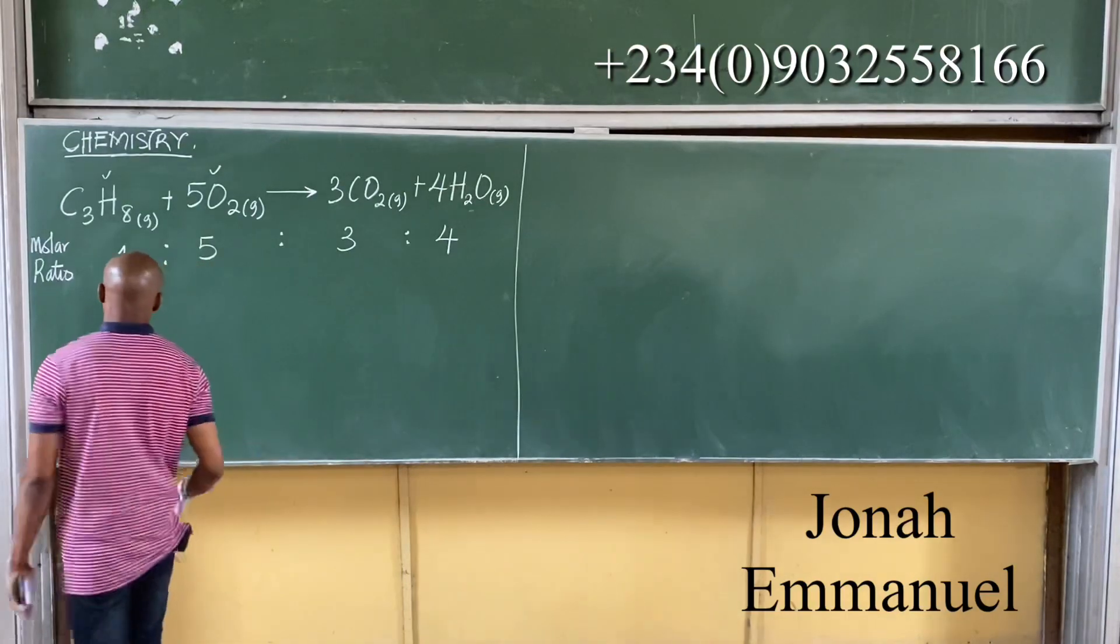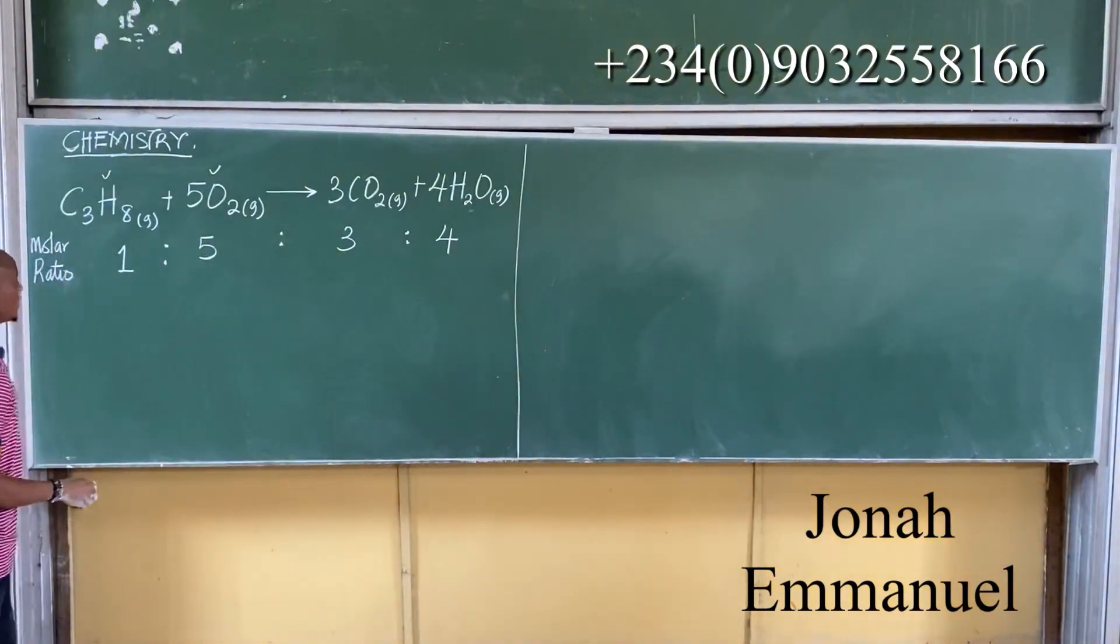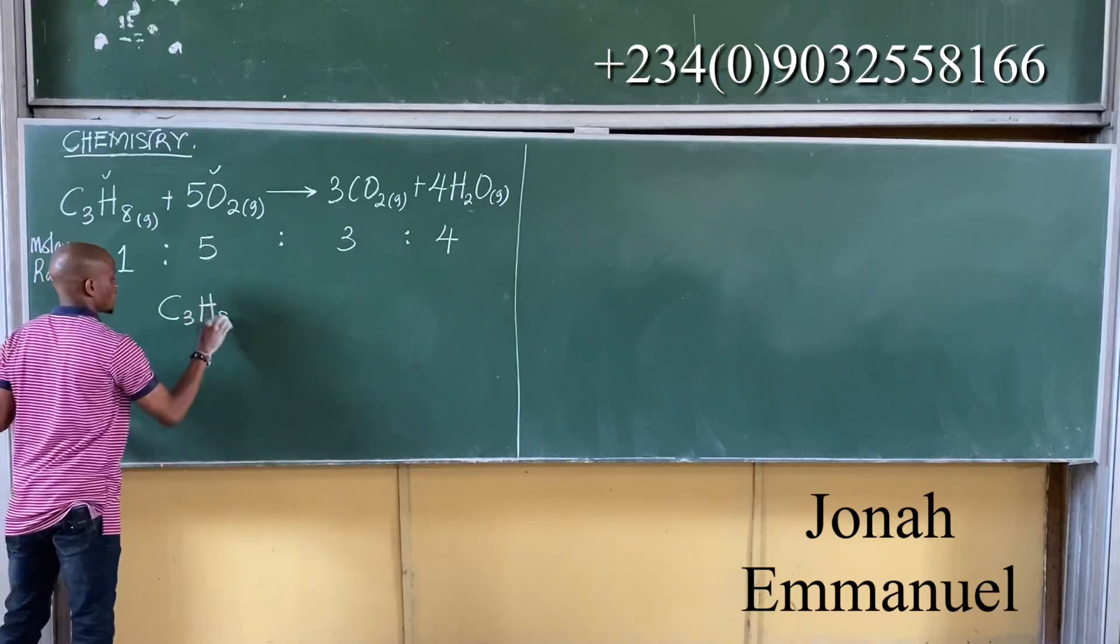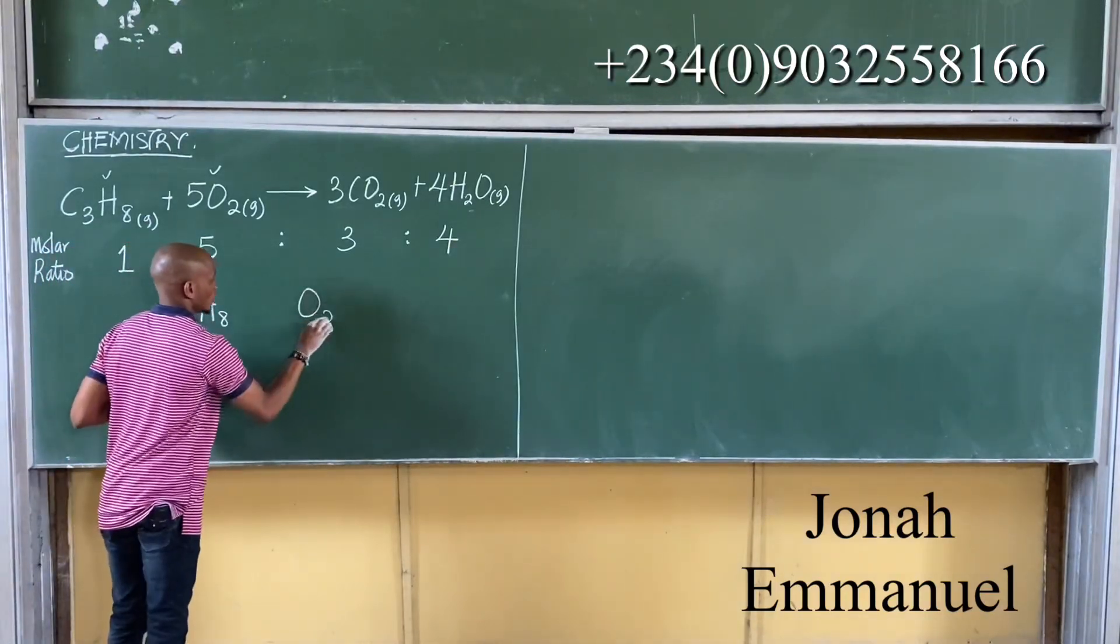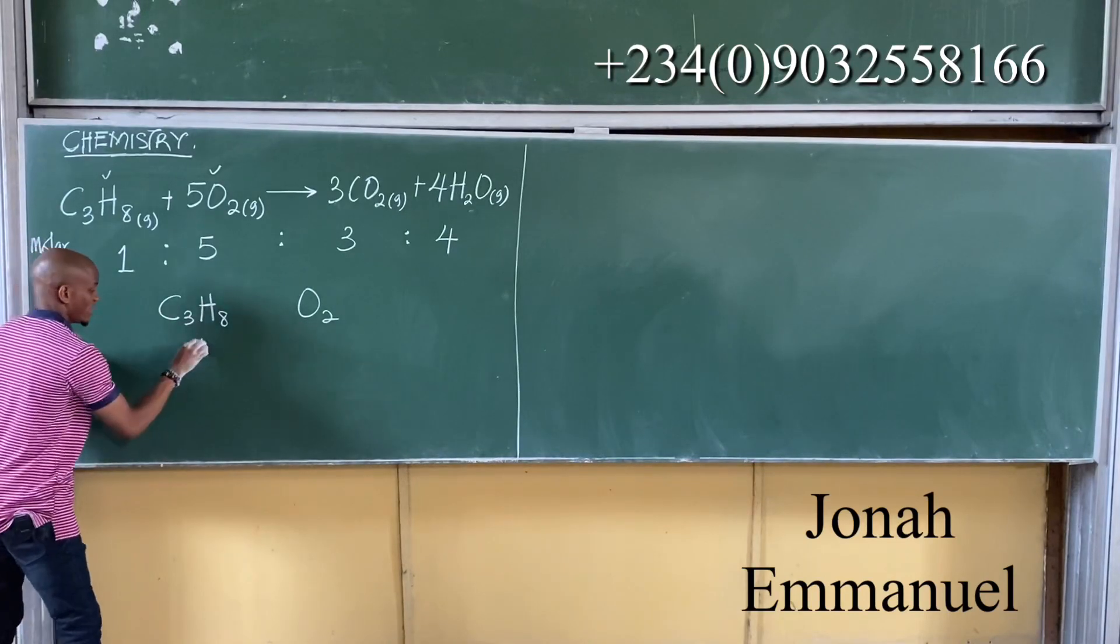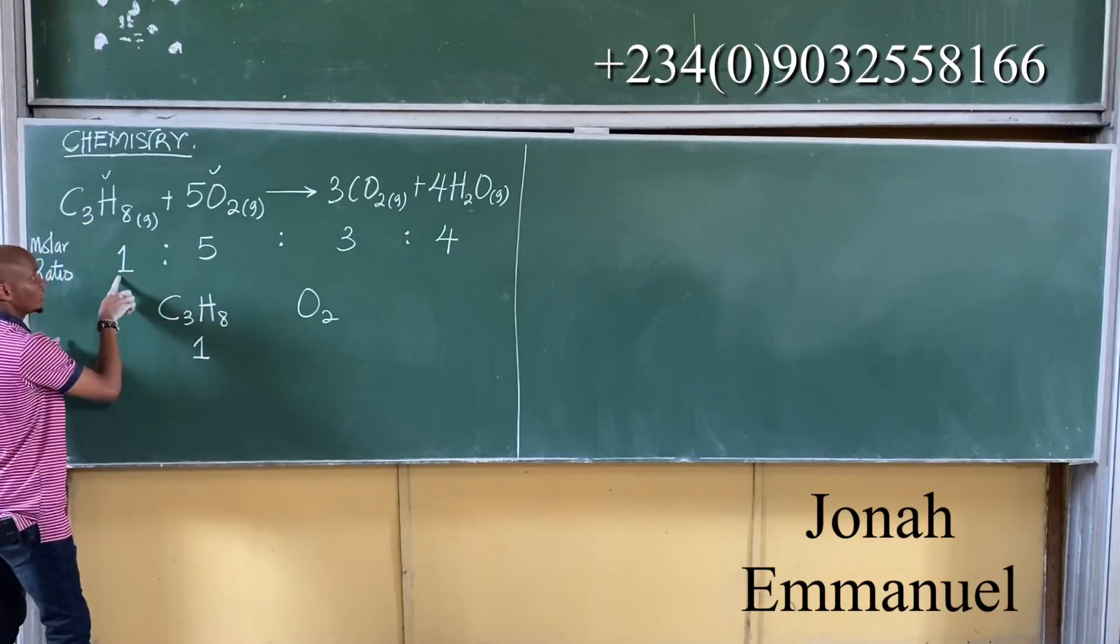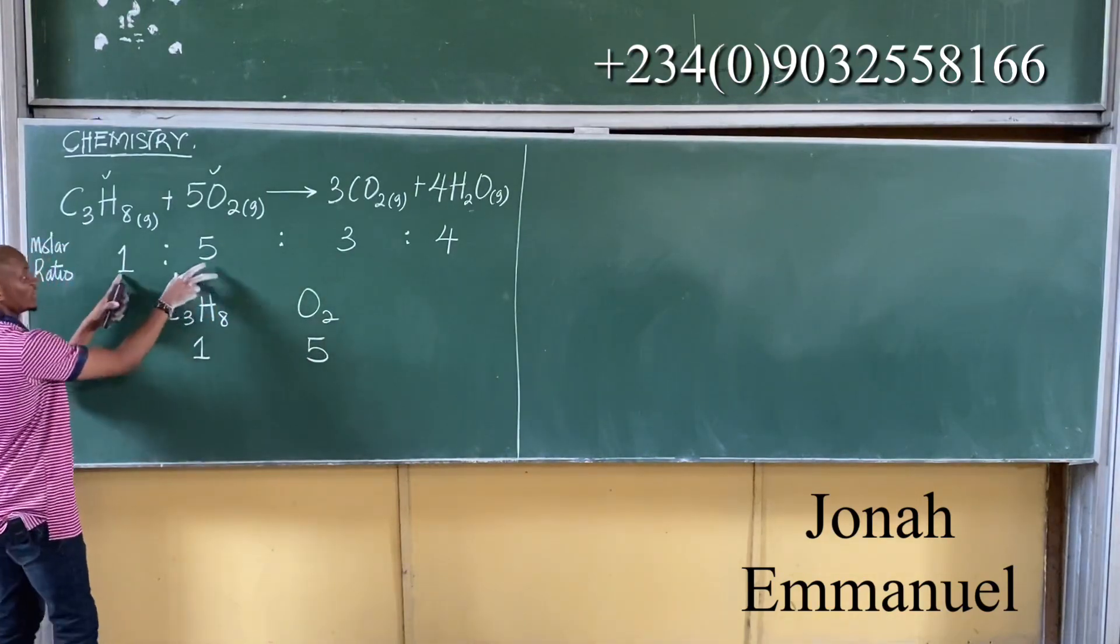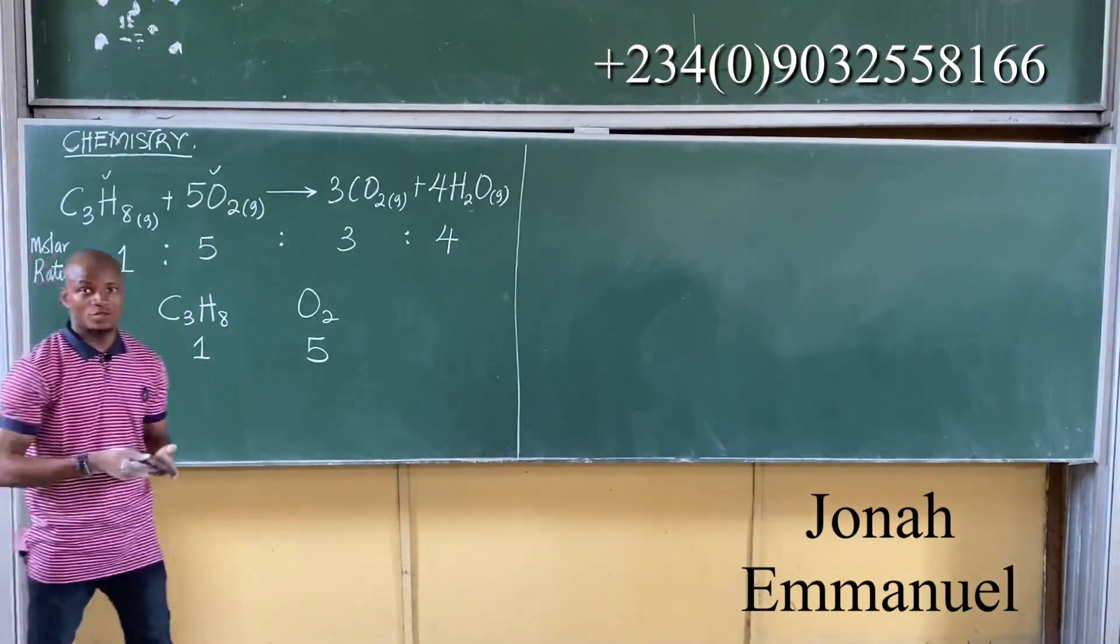So for this now, what I have is this: For propane, I am having C3H8, and then oxygen is O2. From the balanced chemical equation, we said 1 mole of propane will react with 5 moles of oxygen. This is from the balanced chemical equation.